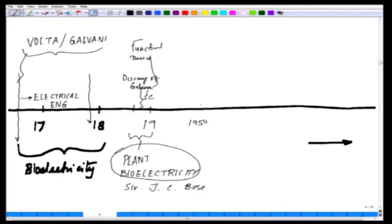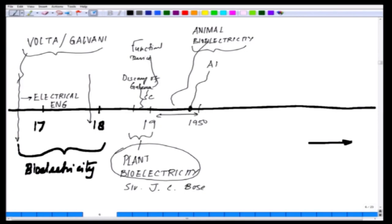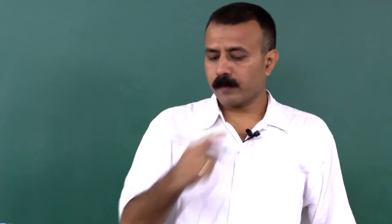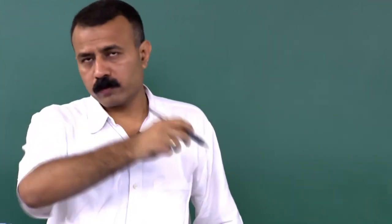During the period 1900 to 1950, there was enormous work happening across Europe on animal bioelectricity. Some of the very hallmark discoveries include the discovery of the action potential by Hodgkin and Huxley, along with several other people whose contributions are equally significant. I am just trying to build up the story of how patch clamp came into being. Even Hodgkin and Huxley used sharp electrodes — you have the cell, a sharp electrode, and you make recordings with a voltmeter.